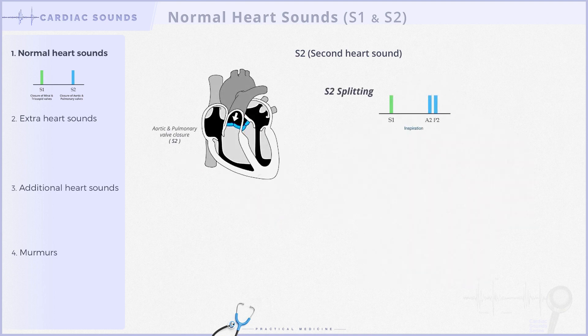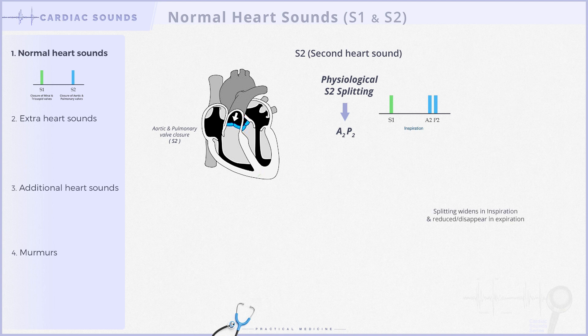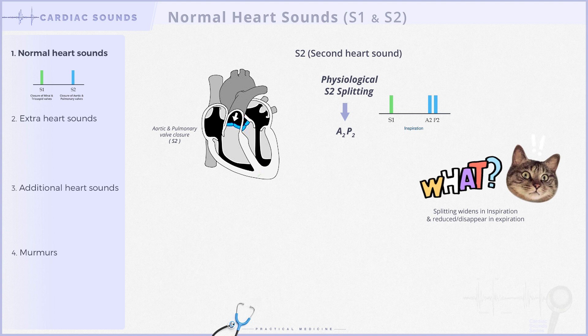In some individuals it's normal to hear a split in S2, allowing you to distinguish the closure of the aortic and pulmonary valves separately. Under normal conditions, the aortic valve closes before the pulmonary valve, resulting in the split S2 being denoted as A2P2. This phenomenon is termed physiological splitting, and its duration varies across different respiratory phases — during inspiration the split widens, while it decreases or may disappear entirely during expiration.